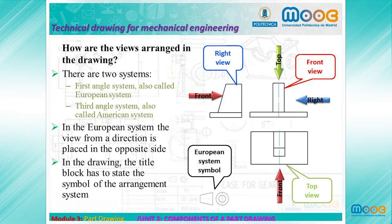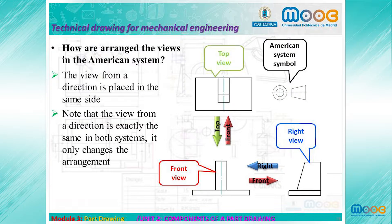How are Views arranged in the Drawing? There are two systems: the First Angle System, also called the European System, and the Third Angle System, also called the American System. In the European System, the View obtained from a direction — for instance, from the Top — is placed on the opposite side. So we have the Front View as the first view.